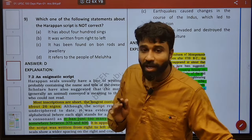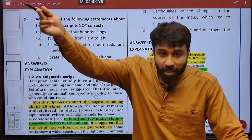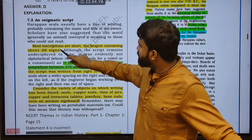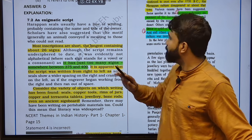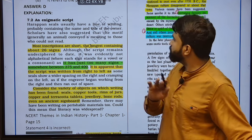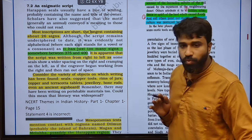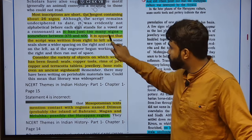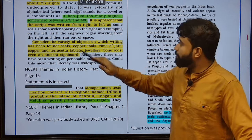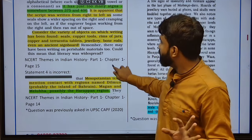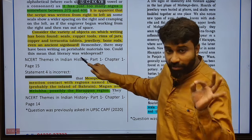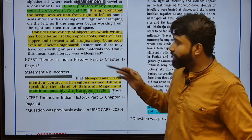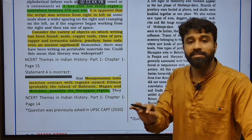This script does not refer to the people of Meluha. Usually the people of Mesopotamia called these Harappan people as Meluha. This is an enigmatic script. Harappan seals usually have a line of writing probably containing the name and title of the owner. Scholars have also suggested that motifs conveyed meaning to those who could not read. Most inscriptions are short, containing about 26 signs. The script contains too many signs — somewhere 375 to 400. Various objects on which writing has been found include seals, copper tools, rims of jars, terracotta tablets, jewelry, and bone rods.